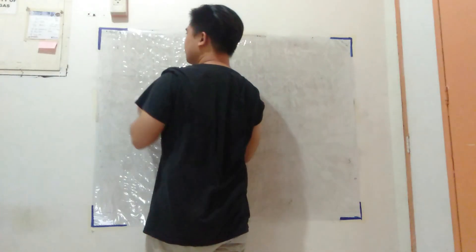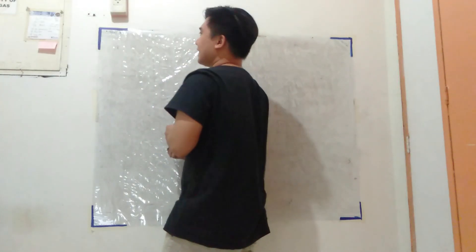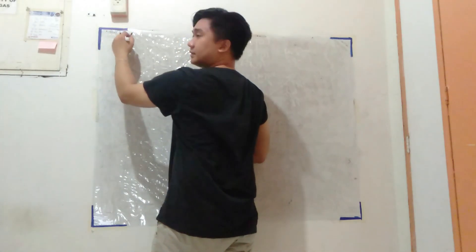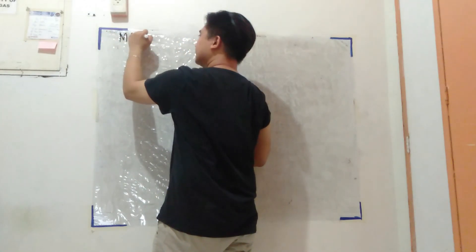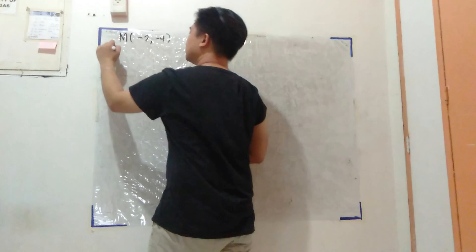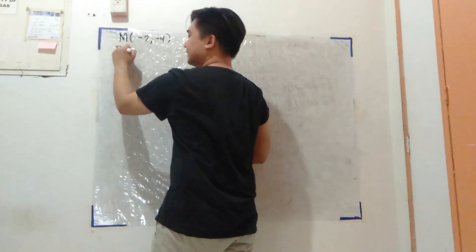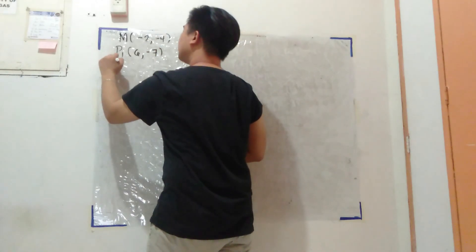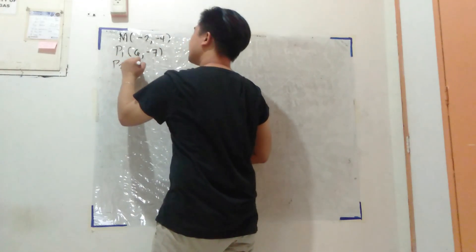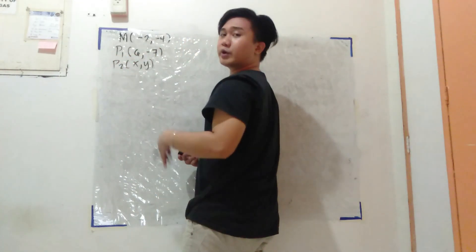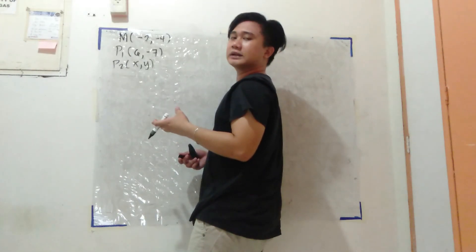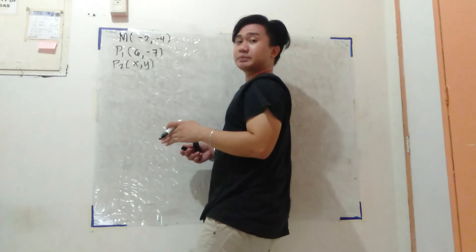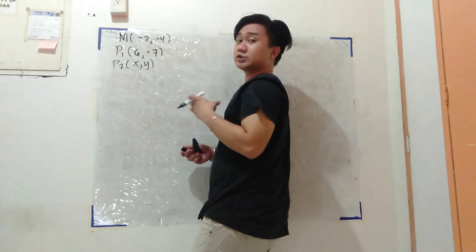So binigyan po tayo ng midpoint ng ating line segment. So sabihin ko na lang M yun, na negative 2, negative 4. And then yung point 1 natin is 6, negative 7, at yung point 2 natin ay unknown, which is x, y. Kapag midpoint po yung tinatanong, under pa din ito ng division of line segment — bisected — wherein R is equal to 1 half.